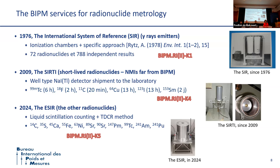We are very pleased to start this year our third service, which is the extension of the SIR — the ESIR — which aims to address all other radionuclides that cannot be measured by the two previous systems. This concerns mainly the pure beta emitters. It is based on a liquid scintillation counter and the primary standardization called the triple-to-double coincidence ratio, which is used to obtain this continuous operation.